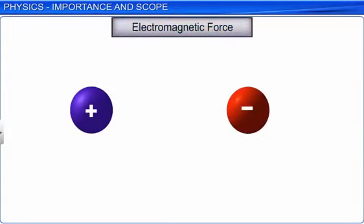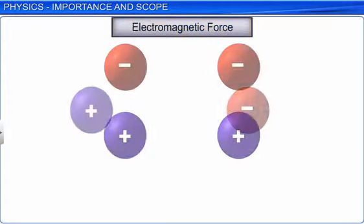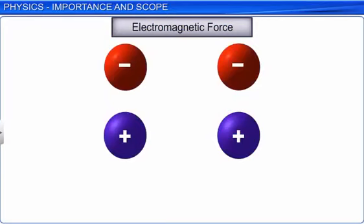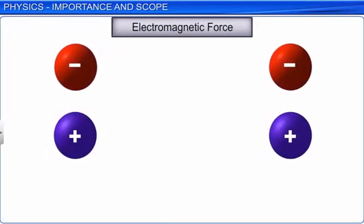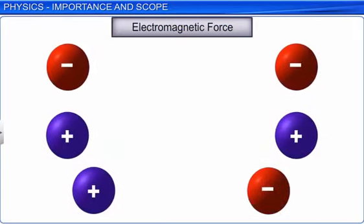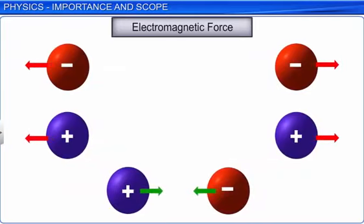Electromagnetic force is the force between two charged particles. Like charged particles repel each other and unlike charged particles attract. Like gravitational force, electromagnetic force is also universal and can act over very large distances.